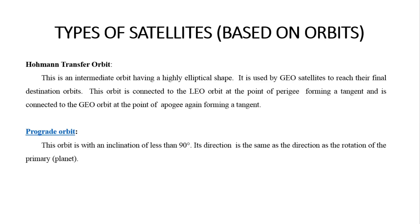Hohmann Transfer Orbit: this is an intermediate orbit having a highly elliptical shape. It is used by geo-satellites to reach their final destination orbits. This orbit is connected to the LEO orbit at the point of perigee, forming a tangent, and is connected to the GEO orbit at the point of apogee, again forming a tangent.